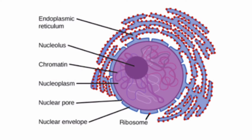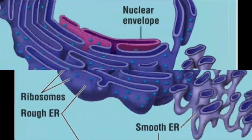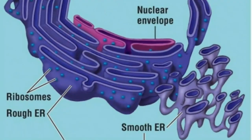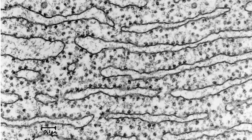Not all endoplasmic reticula have ribosomes on their surface. Ones with ribosomes are known as rough endoplasmic reticula, and ones without ribosomes are smooth endoplasmic reticula. This naming comes from how the endoplasmic reticulum, or ER for short, looks through a microscope when it has or doesn't have ribosomes.